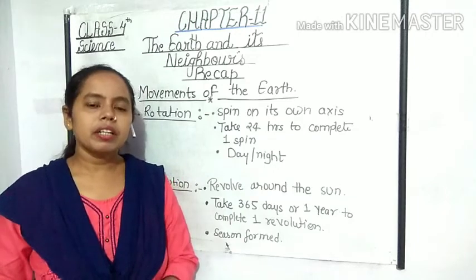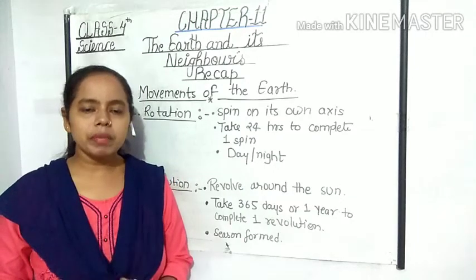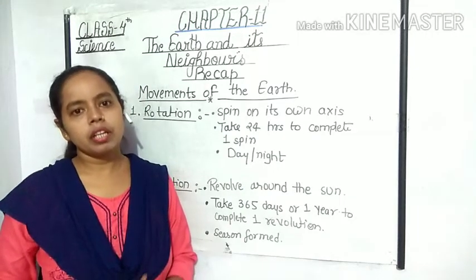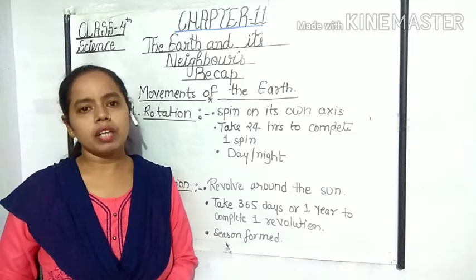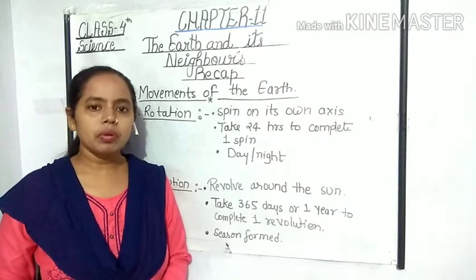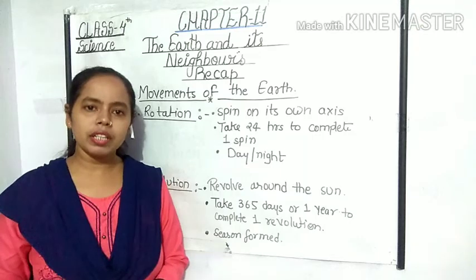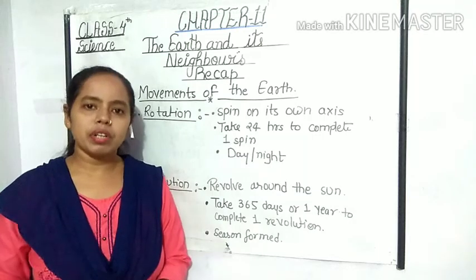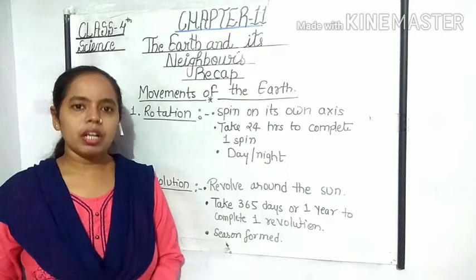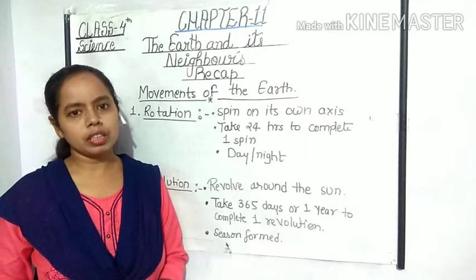Day and night are caused by the rotation of the earth. Day and night are caused by the rotation of the earth. Now, the second movement of the earth is revolution. What is revolution? The earth moves around the sun.